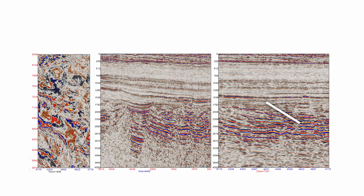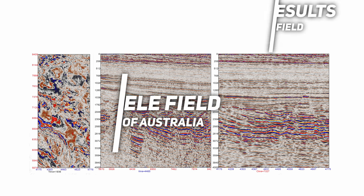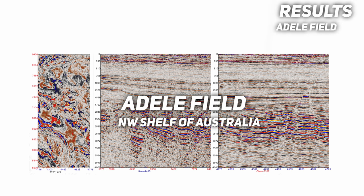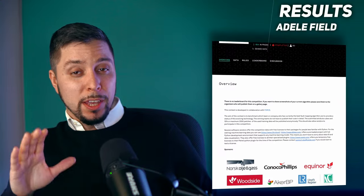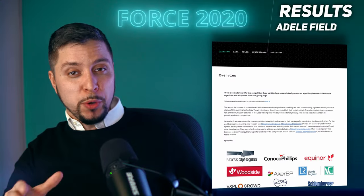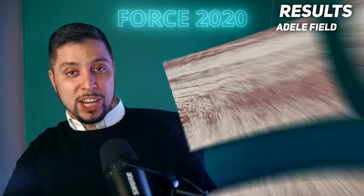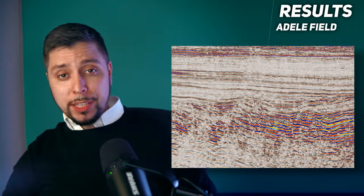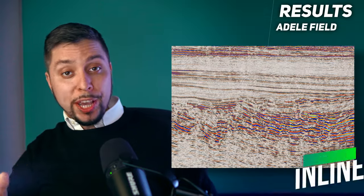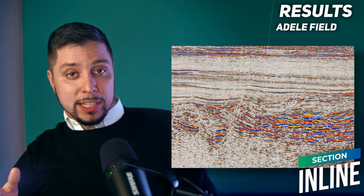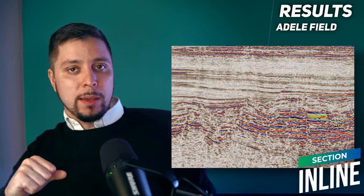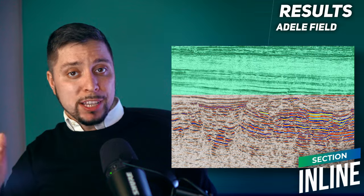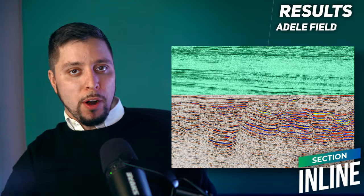I demonstrate the use of the one-shot transfer learning framework on the Adelio field from northwest Australia. The dataset was used as a challenging example in the fourth 2020 competition for fault detection. Looking at the inline section, we can see that the seismic has two distinct faulting systems, which are connected by smaller faulting in the shallow part.